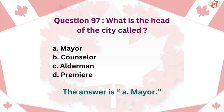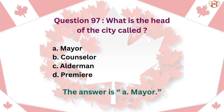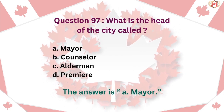Question 97: What is the head of the city called? A. Mayor, B. Councilor, C. Alderman, D. Premier. The answer is A. Mayor.